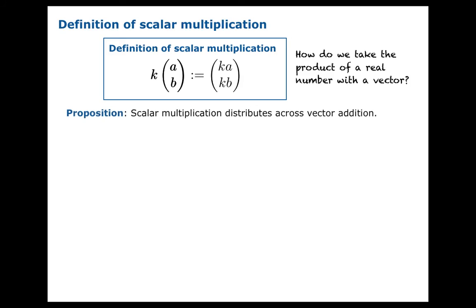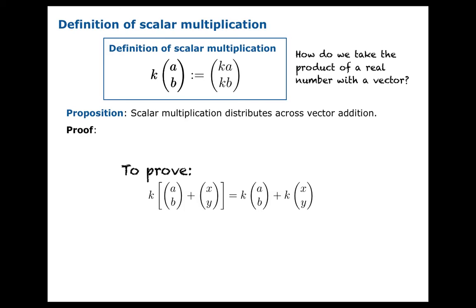Scalar multiplication satisfies nice properties, and one of them is that it distributes across vector addition. What we're trying to prove is that if you add two vectors and then scale — the gadget on the left — that should be the same as if you scaled each individually and then added them together — the gadget on the right. That is the distributive property: you're distributing that scalar multiplication across the vector addition.